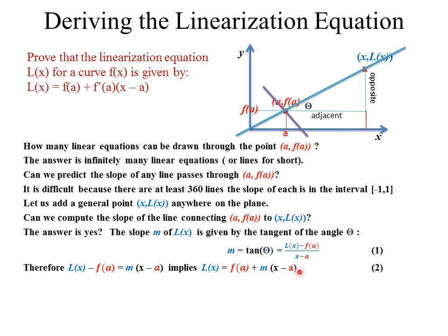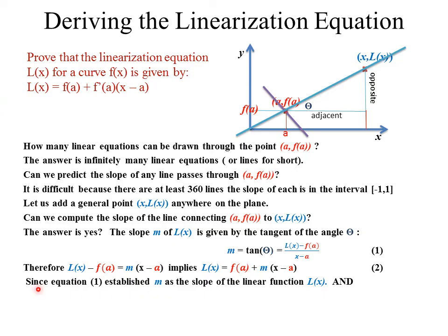We are now one step from the proof. The only difference between this equation and the target equation is M. Since equation one establishes M as the slope of the linear line L of X, and L of X passes through the point A comma F of A — the point of focus — this is the tangent line going through the point of focus.